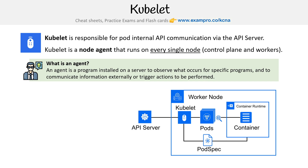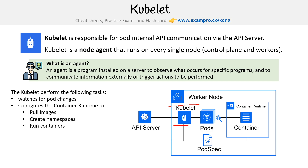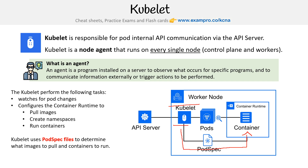Here's an example diagram of kubelet. Notice that it's inside of our worker node. Kubelet performs the following tasks: it watches for pod changes, configures container runtimes to pull images, creates namespaces, and runs containers. Kubelet uses pod spec files to determine what images to pull and containers to run. We have this pod spec file, and from that it knows to deploy that container into the container runtime.